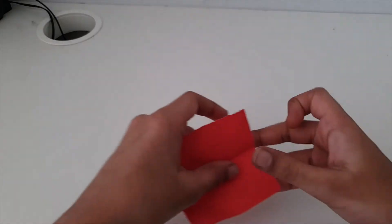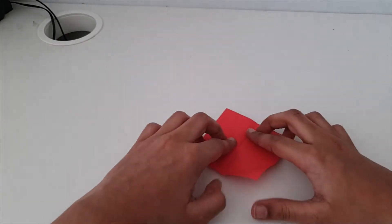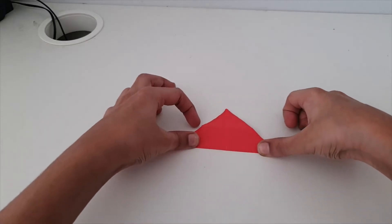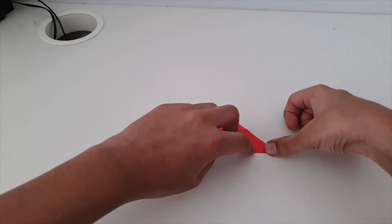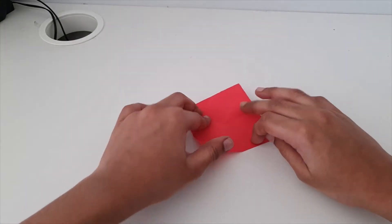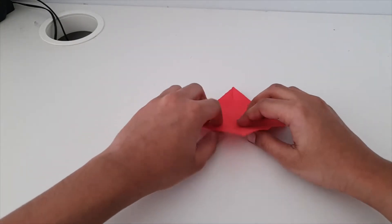For this you need 8 square sheets of paper. First fold it in half diagonally. Unfold, rotate and do the same thing.